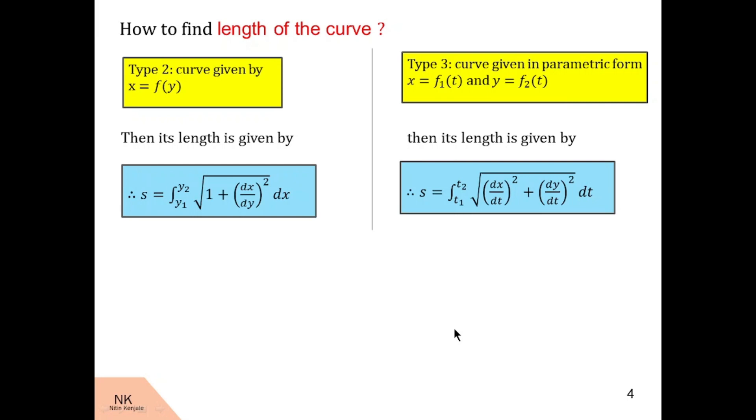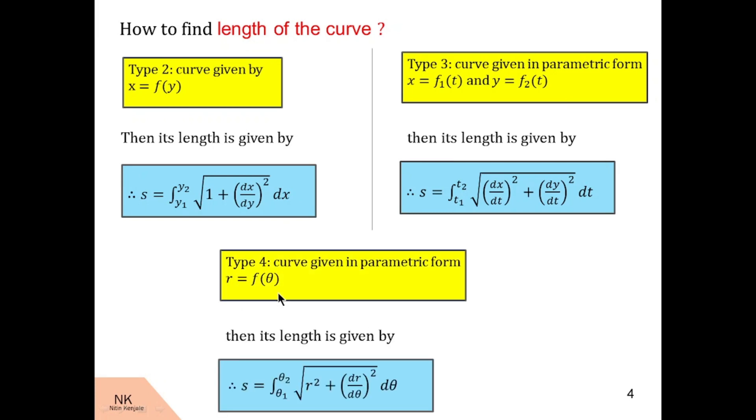And now we see rectification of the curve given in its parametric form r = f(θ). It is given by integration of √(r² + (dr/dθ)²) dθ over the limit θ₁ to θ₂.